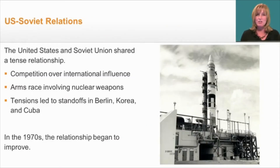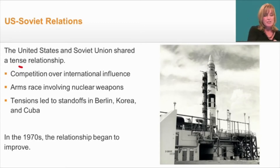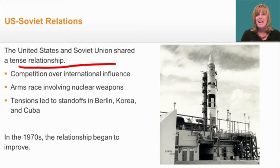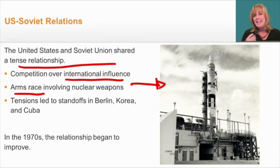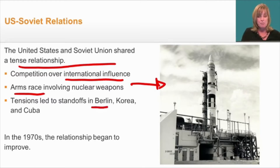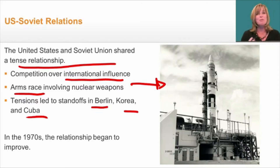Before we get started, let's take a closer look at the events leading up to the Cold War and how tension built between these two nations. Following World War II, the U.S. and the Soviet Union were involved in a conflict in which both nations were trying to exert influence over the world, competing in international influence and an arms race involving nuclear weapons like the ICBM. These tensions led to standoffs and proxy wars around the world, including Berlin, Korea, and Cuba. But what starts to happen in the 1970s is that relations between the two nations begin to improve.